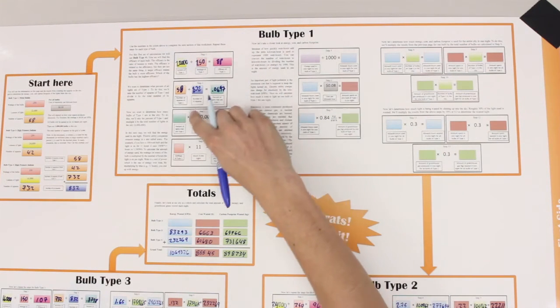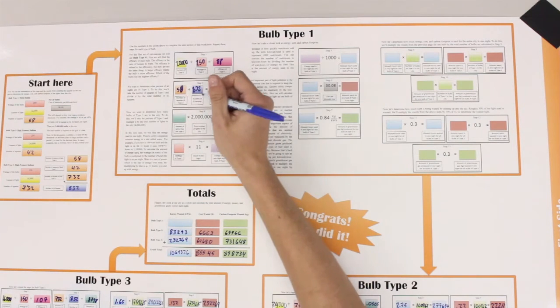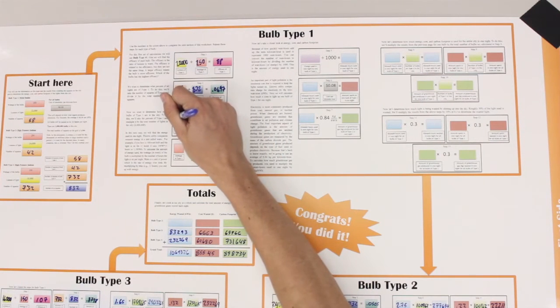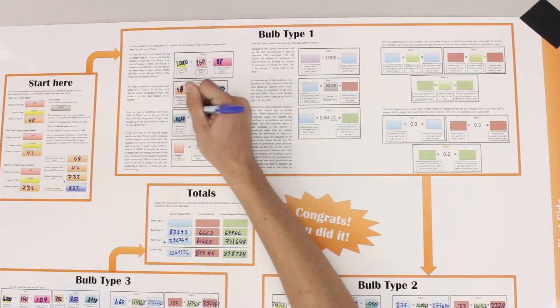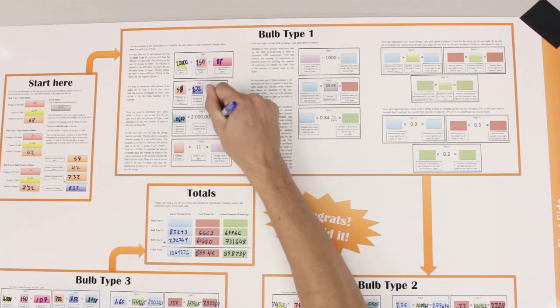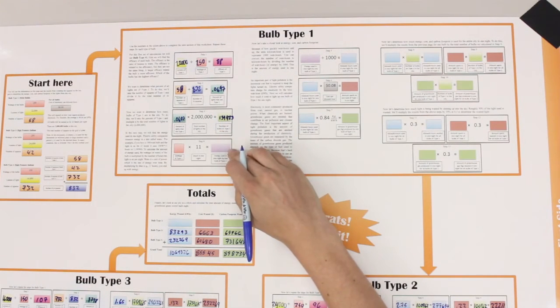Now, take this number and put it in here to find the total number of bulbs in the city. This gives 140,000.